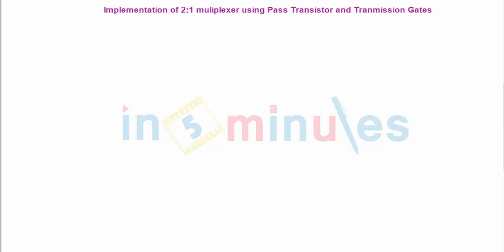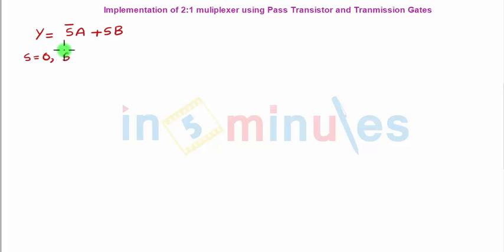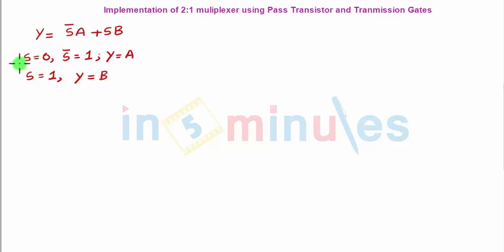So let's write the expression for the 2-to-1 multiplexer. We know that output Y = S̄A + SB, where S is the select line. When S = 0, S̄ = 1 and the output equals A. When S = 1, the output equals B. So in one case the output is A and in the other case it is B.